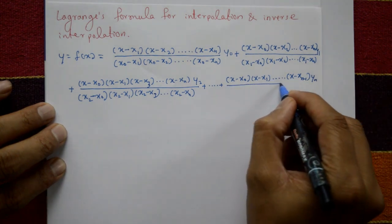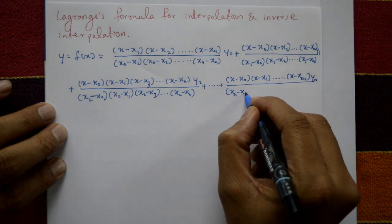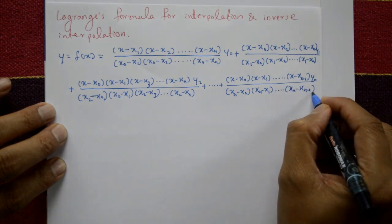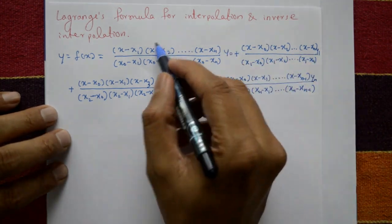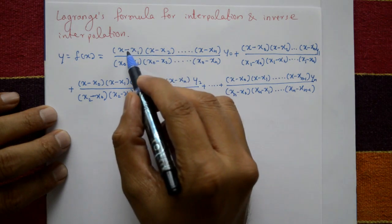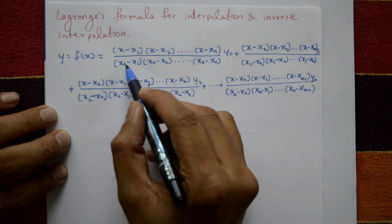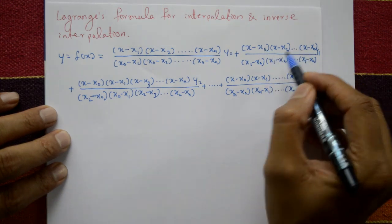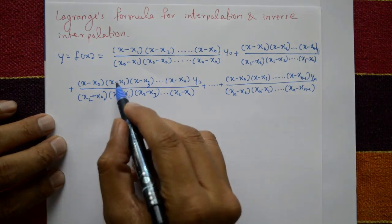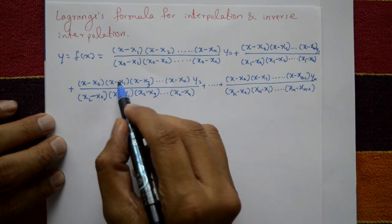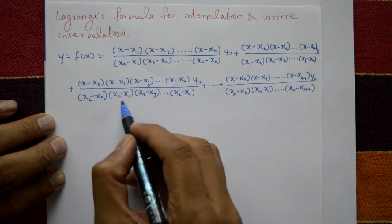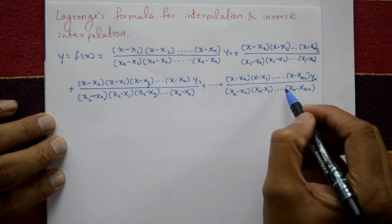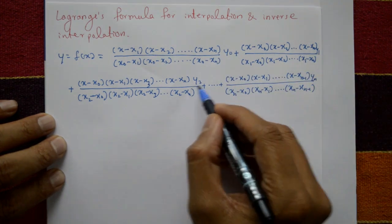How to remember this: the x and y variables follow a pattern. In the first term, the numerator excludes x naught and the denominator includes x naught, with y naught. In the second term, the numerator excludes x1 but the denominator includes x1, with y1. In the third term, the numerator excludes x2 but the denominator includes x2, with y2. And so on — the last term excludes xn in the numerator but includes xn in the denominator, with yn.